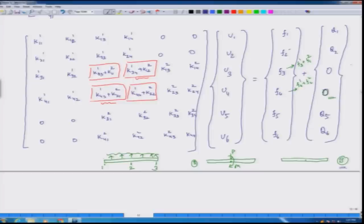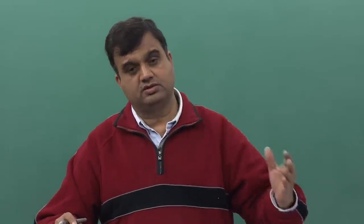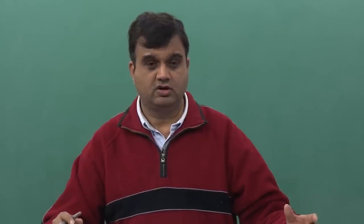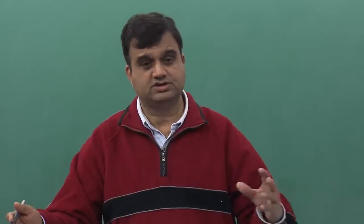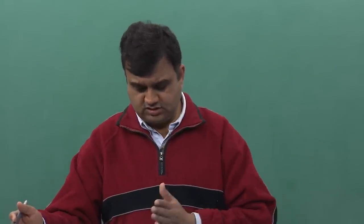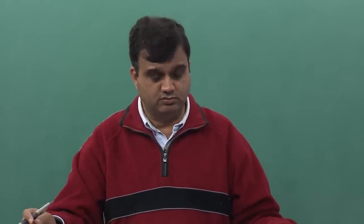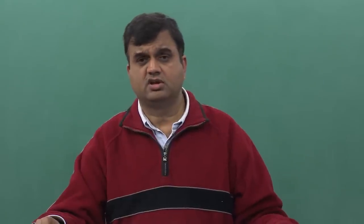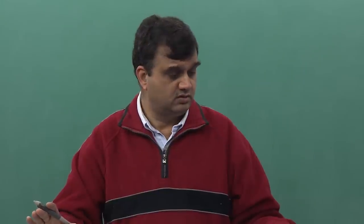So this beam has 2 boundaries x equals 0 and x equals L and at each end I will have 2 boundary conditions. Either they will be related to the primary variables which are w and its slope or they will be related to associated secondary variables which are shear force and bending moments. But at each end I have to specify these 2 conditions, then I will be able to predict how this system is going to behave. So that is what we will do in our next class and thanks for today and we will again meet tomorrow. Thank you.